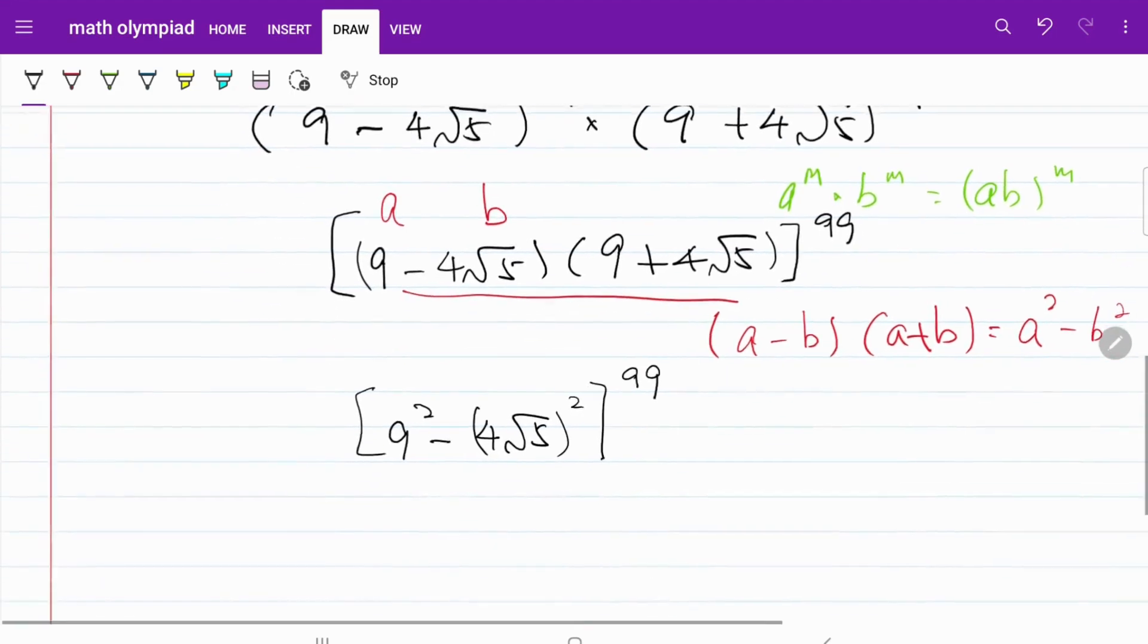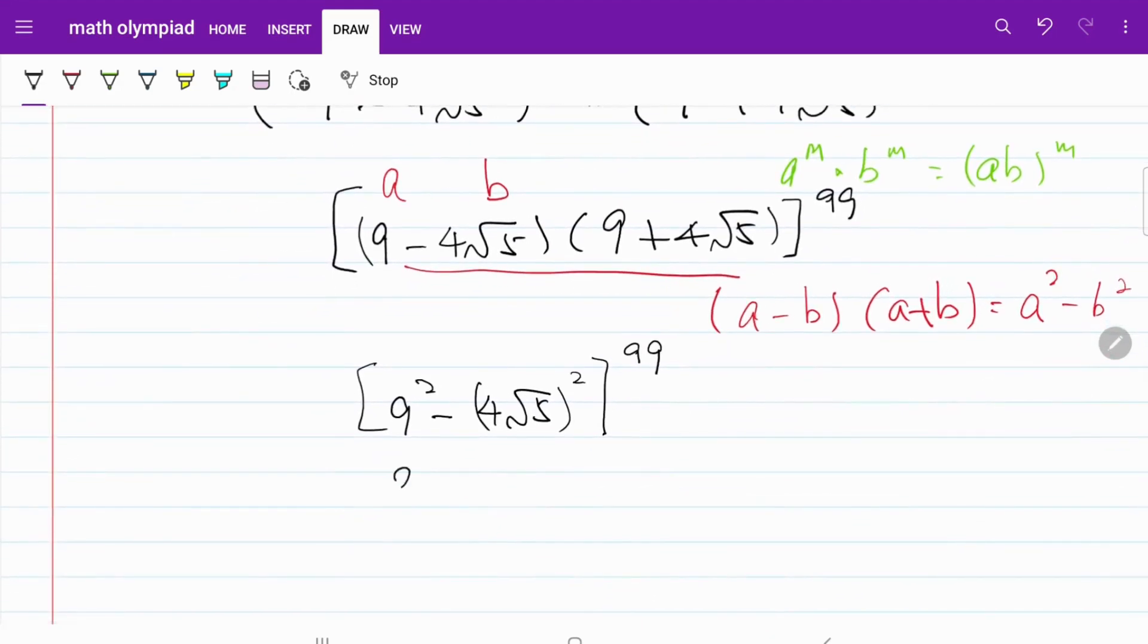And from there I have 81 minus 16 multiplied by 5 to the power of 99. That's equal to 81 minus 80 to the power of 99. That happens to be equal to 1. For such a complicated looking expression we end up with a nice simple answer.